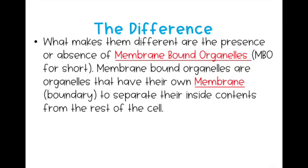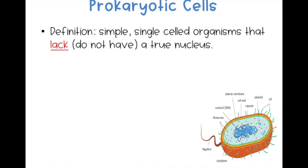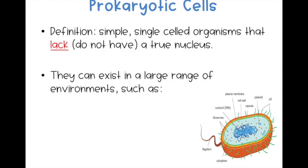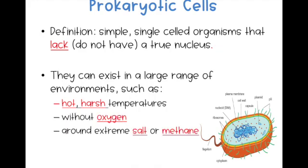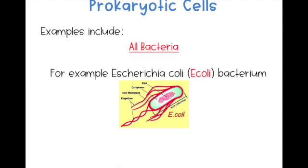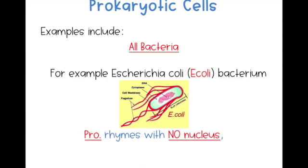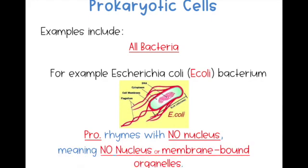What makes them different are those membrane-bound organelles. Eukaryotes have membrane-bound organelles; prokaryotes do not. Prokaryotic cells are simple single-celled organisms that do not have a true nucleus. They can exist in a very large range of environments such as hot, harsh temperatures, without oxygen, in extreme salt concentrations, or with lots of methane gas. Remember: 'pro' rhymes with 'no' — no nucleus, no membrane-bound organelles.